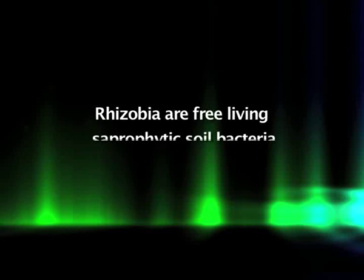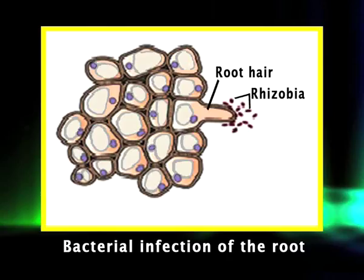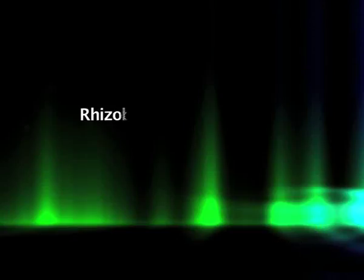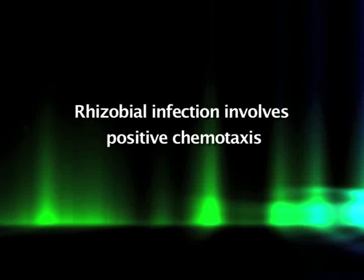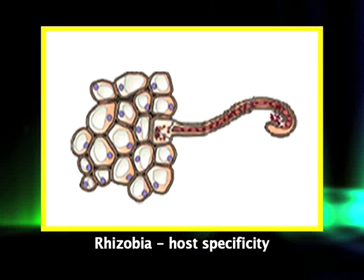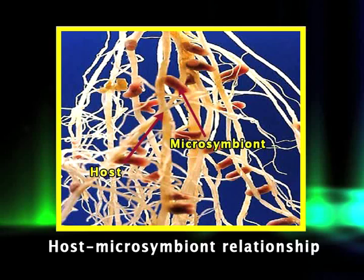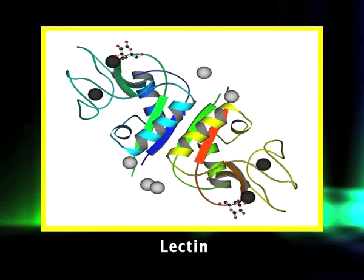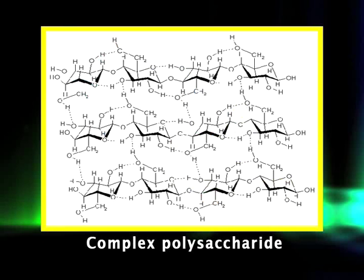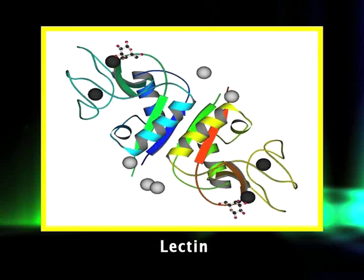Rhizobia are free-living saprophytic soil bacteria. The initial attraction of rhizobia to host roots appears to involve positive chemotaxis — movement towards a chemical. Rhizobia host specificity is determined when the rhizobia attach to the root hairs, and must involve some form of recognition between cells involving chemical linkages between unique molecules on cell surfaces. In the case of rhizobia-host interactions, recognition appears to involve two classes of molecules: lectins and complex polysaccharides. Lectins are small non-enzymatic proteins synthesized by the host that recognize and bind to specific carbohydrates.